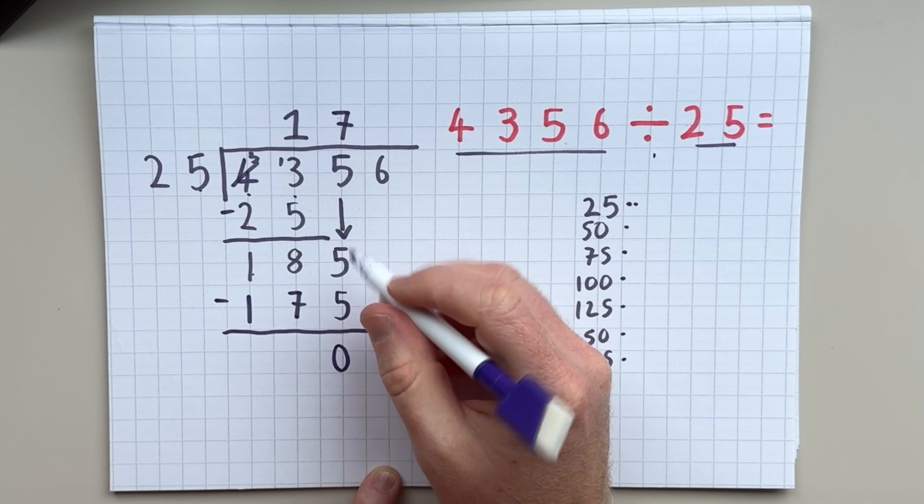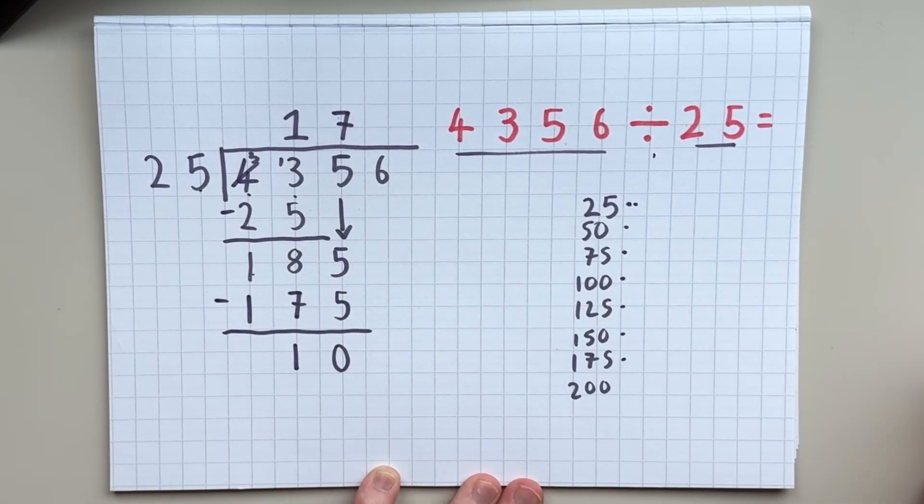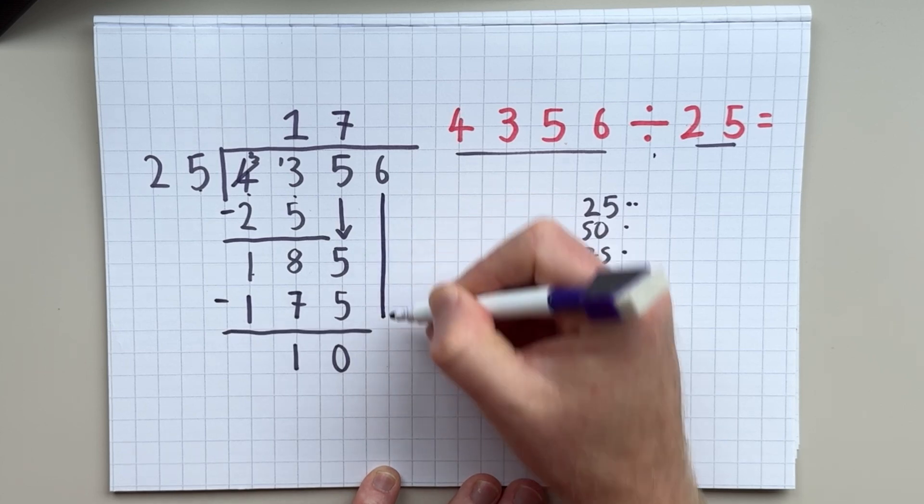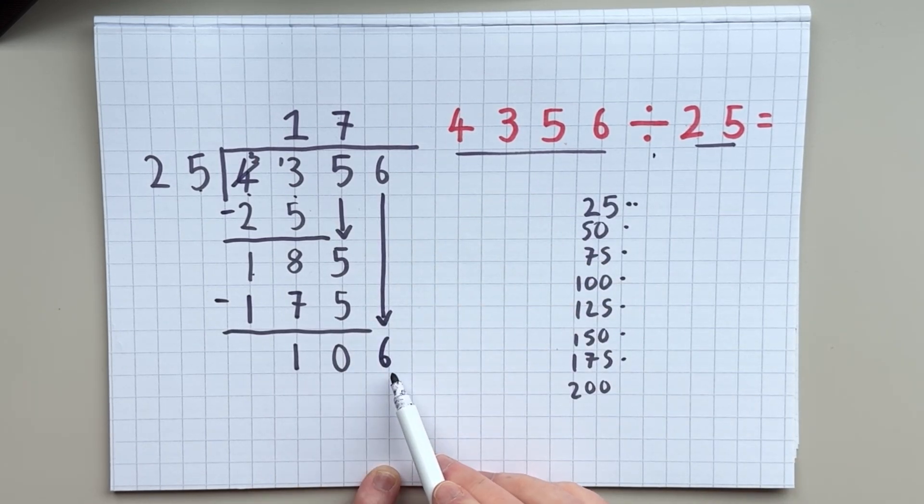5 take away 5, 0. 8 take away 7, 1. 1 take away 1. So I have a remainder of 10 now. And now I'm going to bring down this 6. I have 106 remainder.